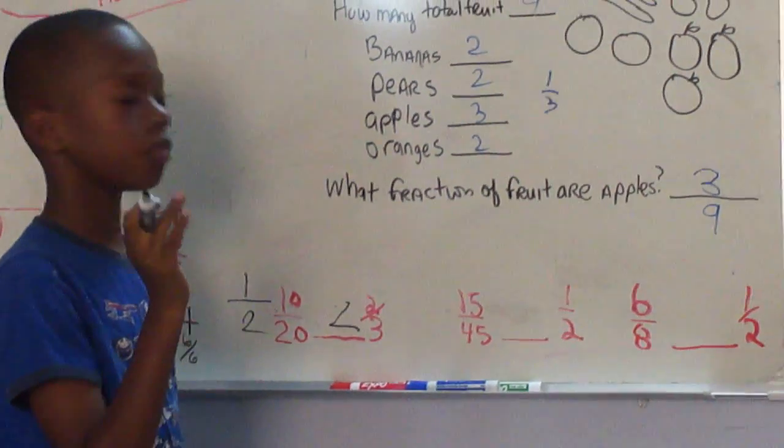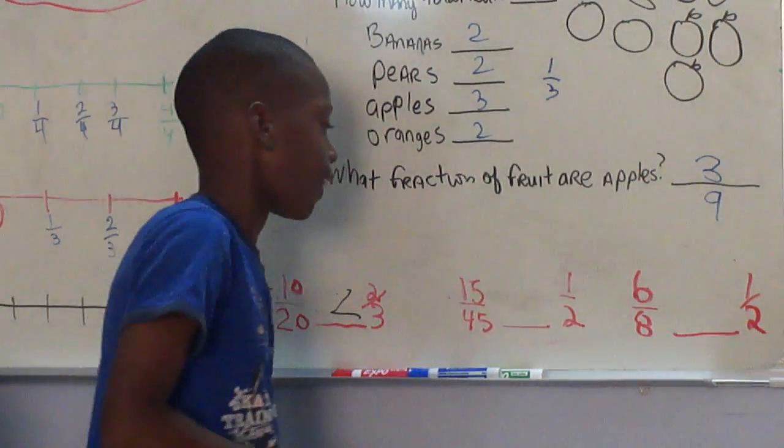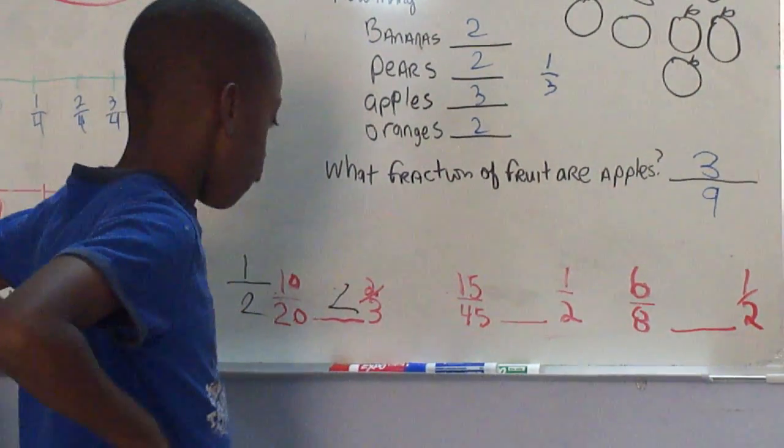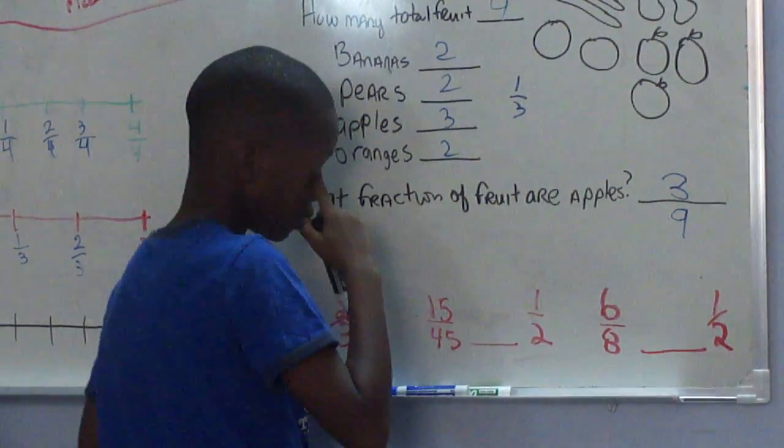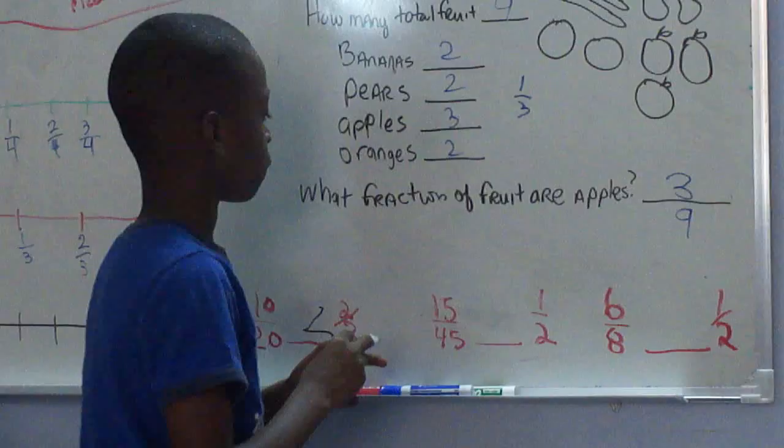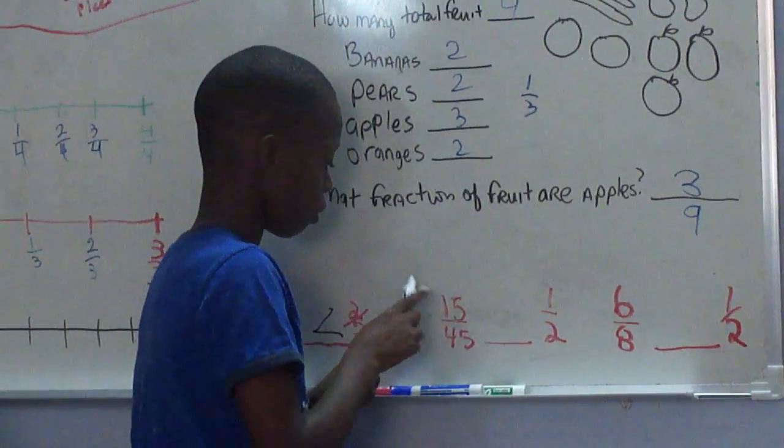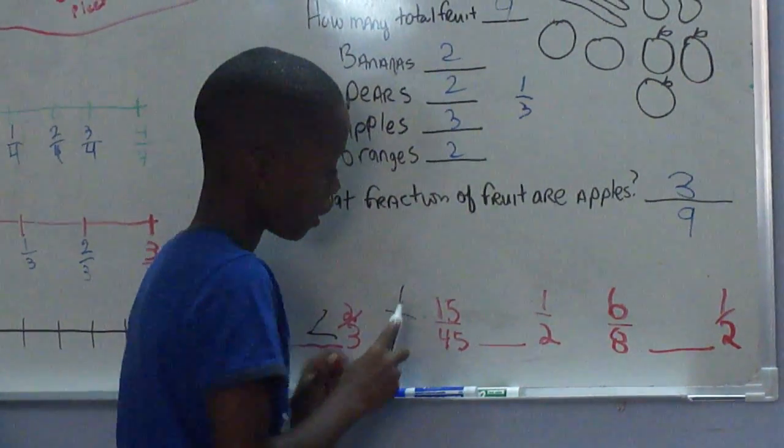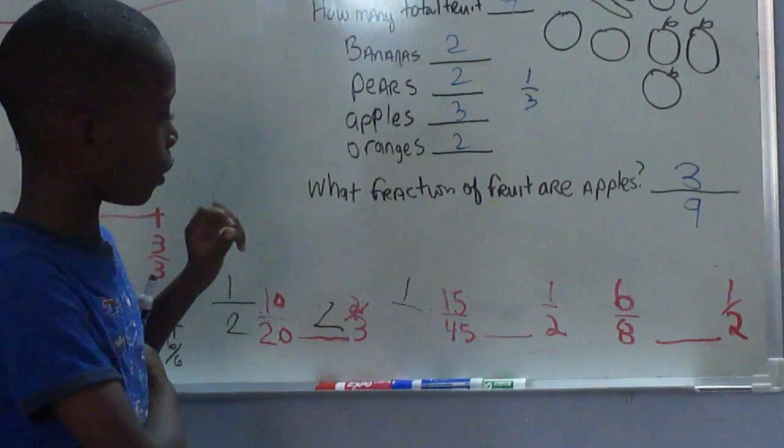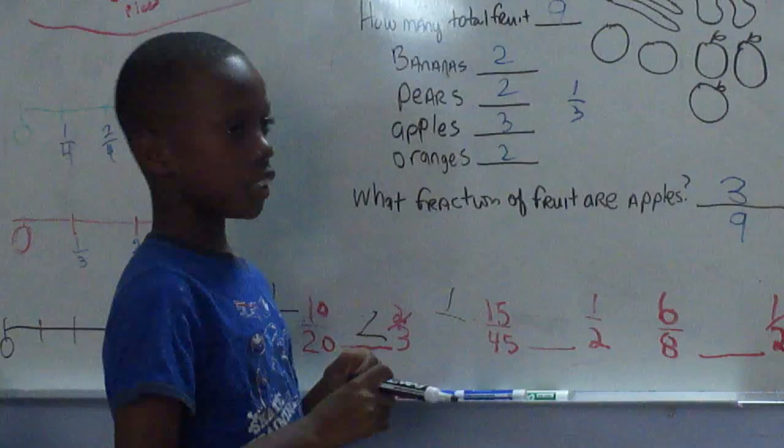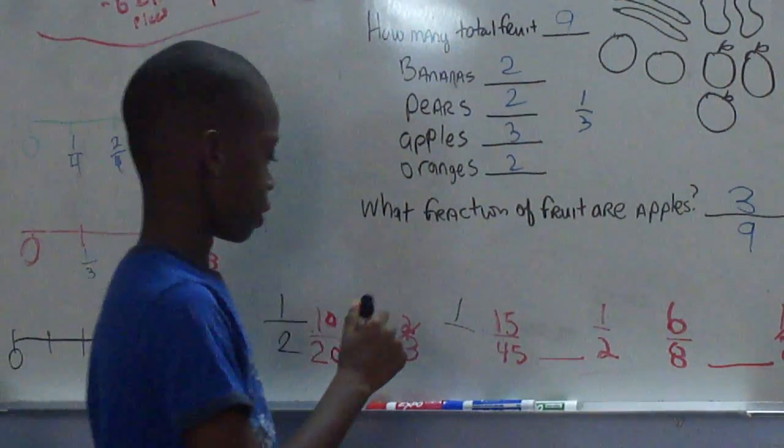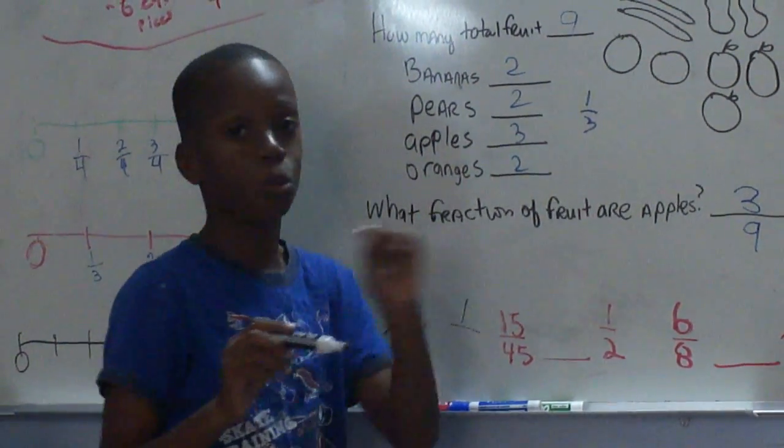Next one. 15 over 45. Is that equal to, greater than, or less than one-half? As you can see, 15 goes into 15 one time. 15 goes into 45... 15 and 45 have a 30 difference. But if you take that zero away, you get one-third.